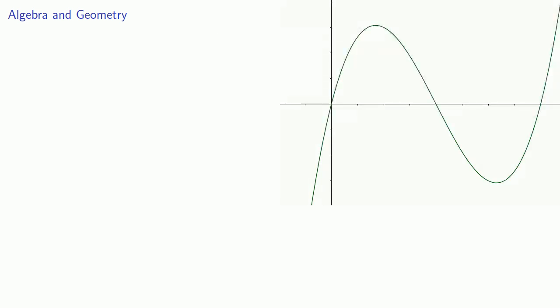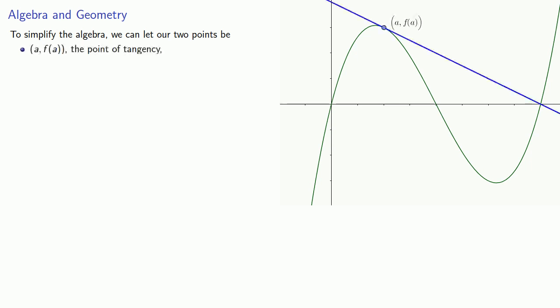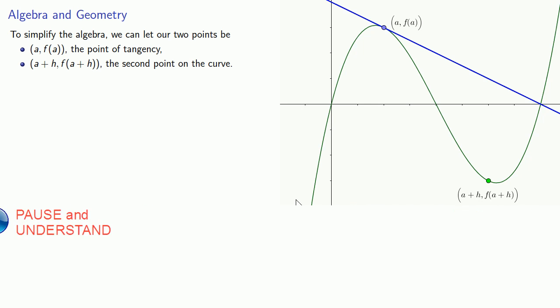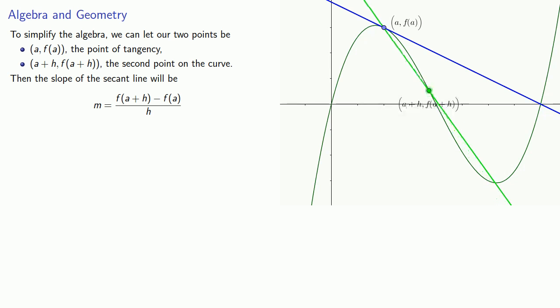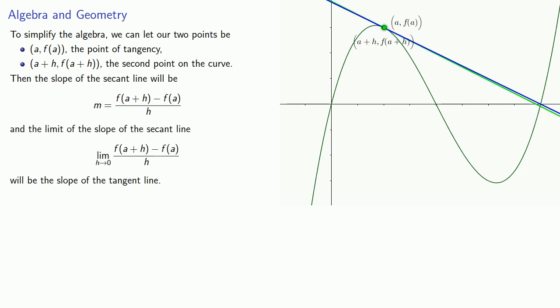The primary difficulty with this approach is that factoring the expression can become complicated. To simplify the algebra, we let the two points be (a, f(a)) — the point of tangency — and a nearby point (a + h, f(a + h)). The slope of the secant line is then [f(a + h) − f(a)] / h. As the second point approaches the point of tangency, h → 0, and the slope of the secant line approaches the slope of the tangent line.